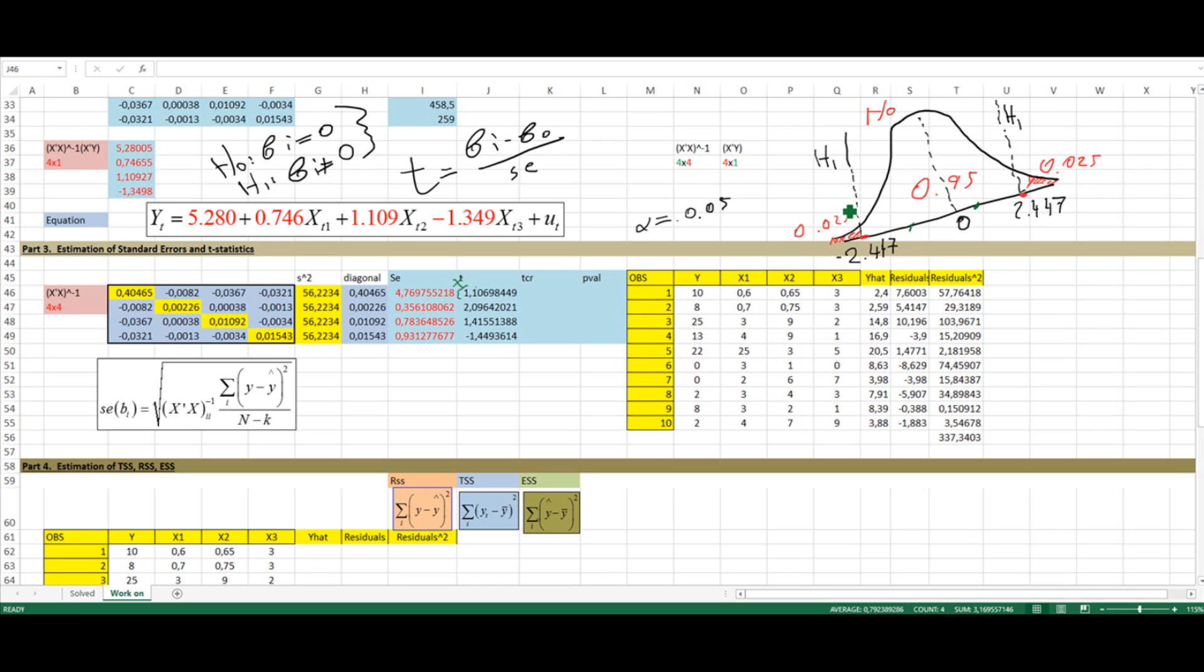One more thing before we move to the next part is that we could have estimated the critical values directly in Excel. In other words, we didn't have to resort to a t table. So I can go ahead and ask Excel to produce those values for me. So the t-critical formula is equal to t.inv.2t, since I'm doing a two-sided test. And then it's asking me for the probability. I'm going to conduct my test at the five percent level, and my degrees of freedom are equal to six. And as you can see, I get exactly the same critical value as we got earlier from the table.